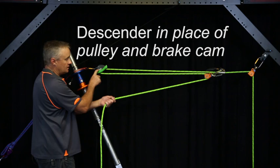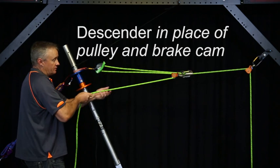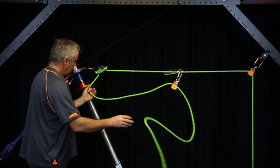So we've removed our stationary pulley. We've also removed our brake cam. And we've added a descender into our system. So as we haul up on that load the rope will still run through and it will capture the progress as we go.